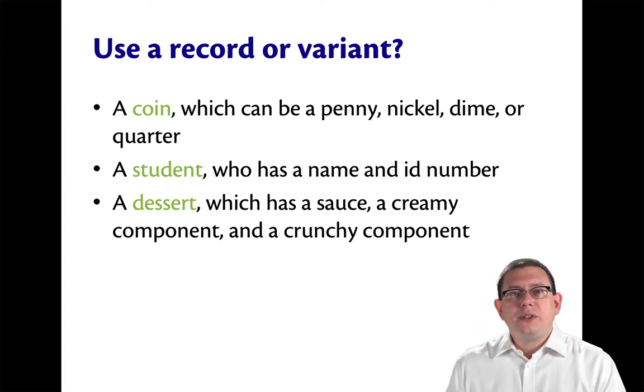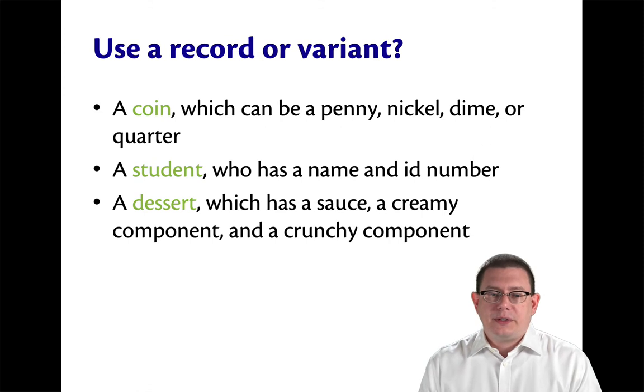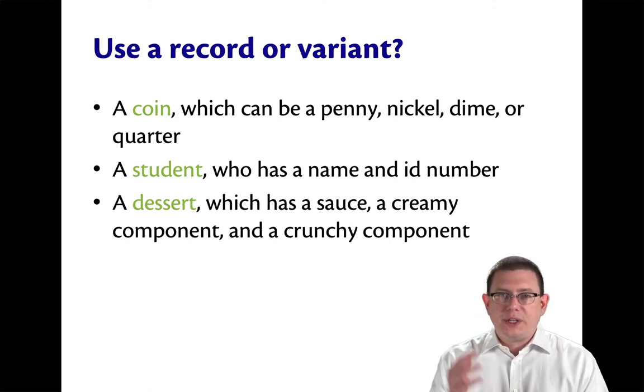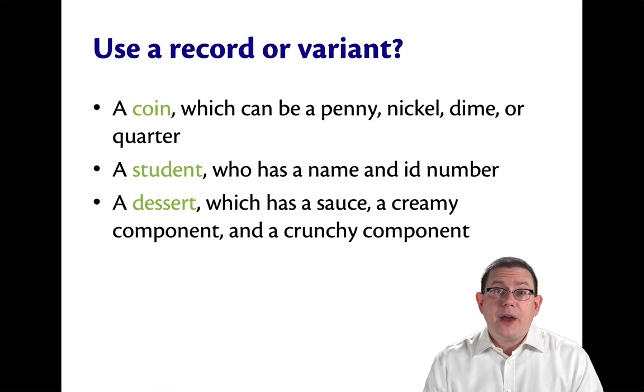Well, we're trying to model something that could be one of several things. A coin is either a penny, or a nickel, or a dime, or a quarter. And a variant lets us do that. It lets us have those four different constructors, and any value of that type would be exactly one of them.